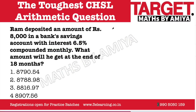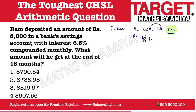So here the principle is given. The rate is 6.5 divided by 12 — that is our monthly rate. Since we are compounding monthly, in 18 months we compound 18 times, so N equals 18. Amount equals 8000 into (1 + 6.5/(12×100)) raised to power 18.